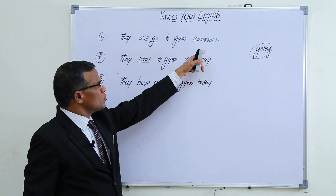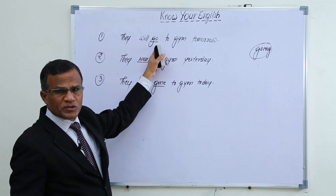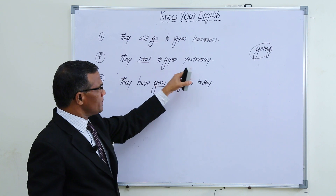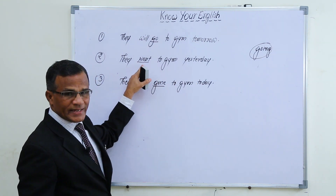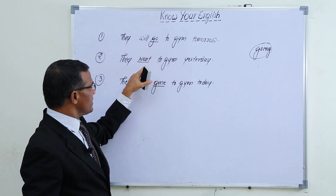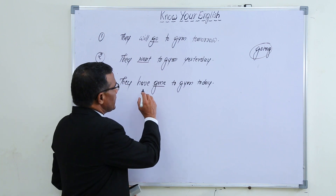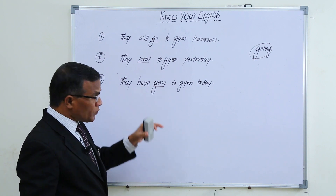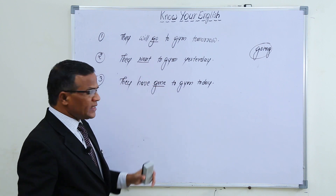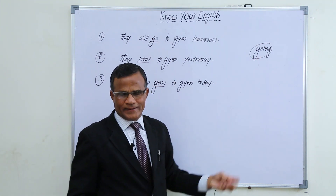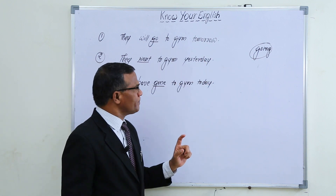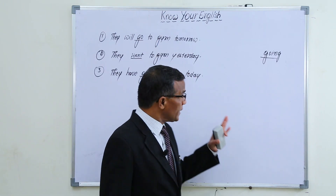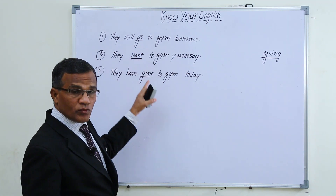In the first sentence, 'they will go to the gym tomorrow' — 'will' is the helping verb and 'go' is the main verb. In the second sentence, 'went' is used. In the third sentence, 'have gone' — 'have' is the helping verb. So we have: go, went, gone. These three words all talk about going, but each form indicates a different time.